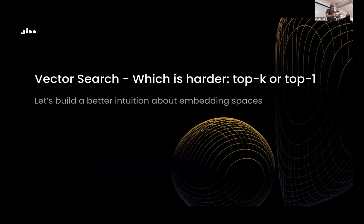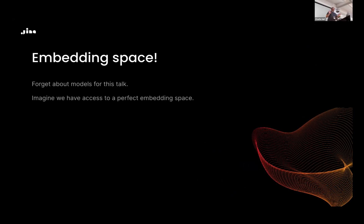Ready for some math? I liked the eBay talk about intuition for vector embeddings and embedding spaces, and I'd like to build a little better intuition about embedding spaces. Forget about models — only think about vector spaces. Which is harder: doing top-K or top-1 in two-dimensional space? Let's assume a perfect vector space — what can we achieve there?